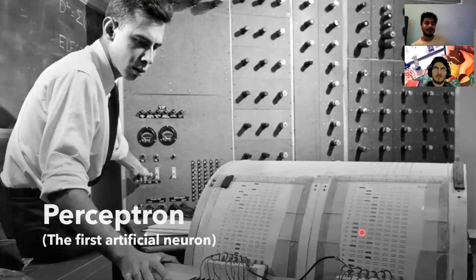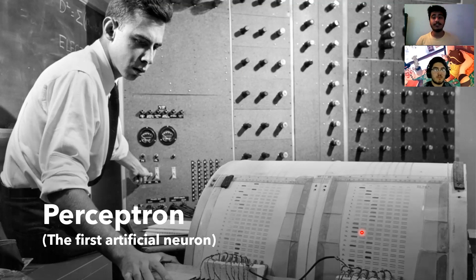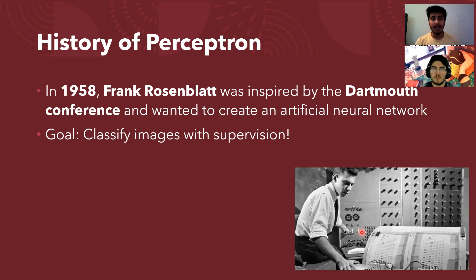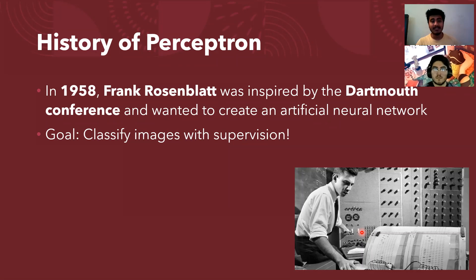That's basically how neurons work in our head. Now let's talk about a perceptron — the first artificial neuron, not neural network, but a neuron. In 1958, Frank Rosenblatt was inspired by the Dartmouth Conference, which was hosted by John McCarthy, who is well known in the field of AI.